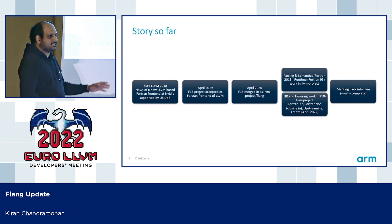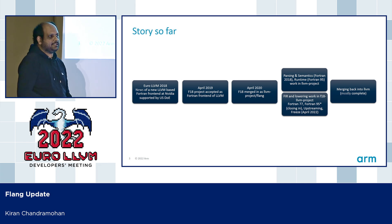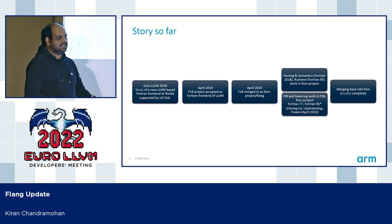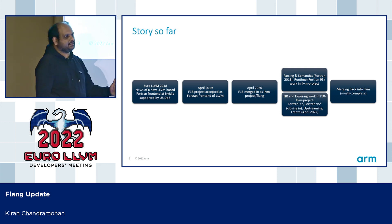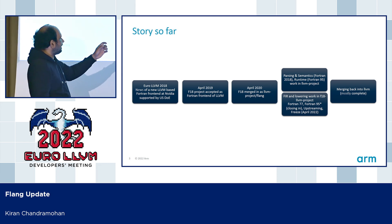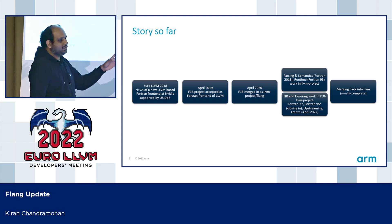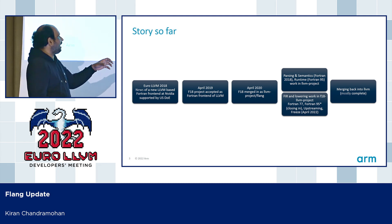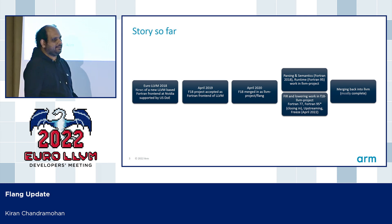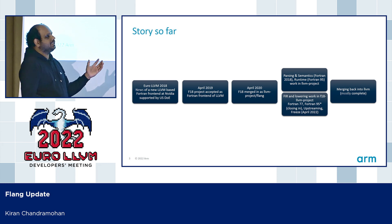This is the development history of the Flang compiler. Somewhere in 2018, news began to come of a new Fortran front-end being written at NVIDIA with support of the US DOE labs. In 2019, this F18 project was accepted as the Fortran front-end of LLVM, and sometime in 2020 this code was all merged in. While most of the code made it in, a bit of the code mostly responsible for converting the parse tree to LLVM IR did not make it in.